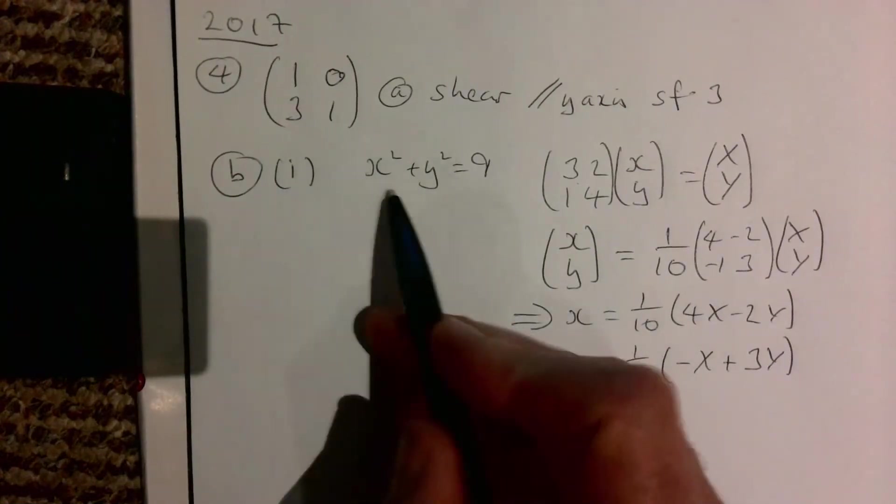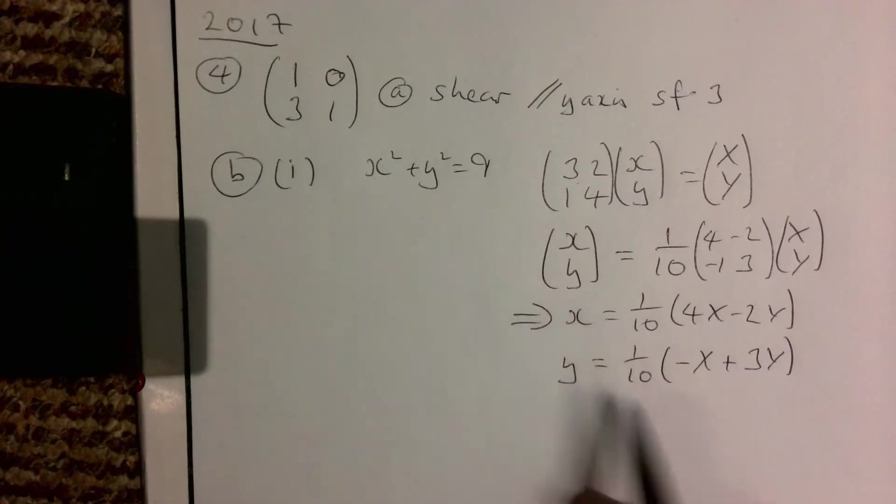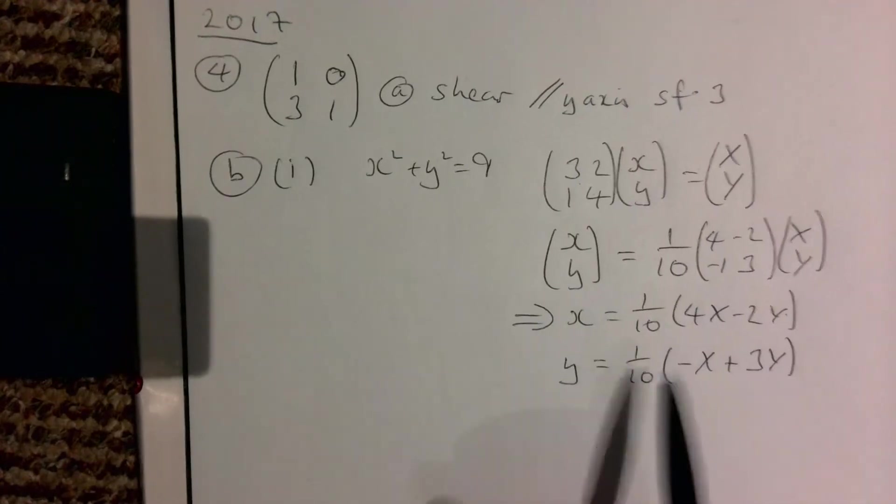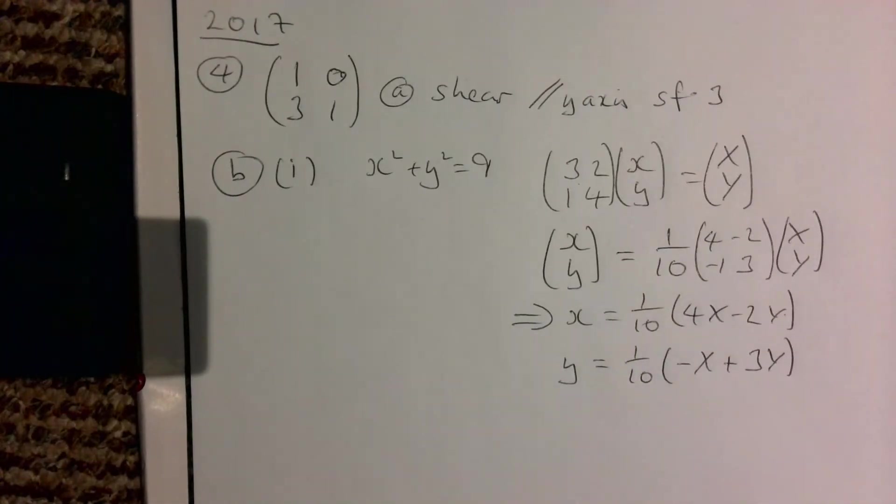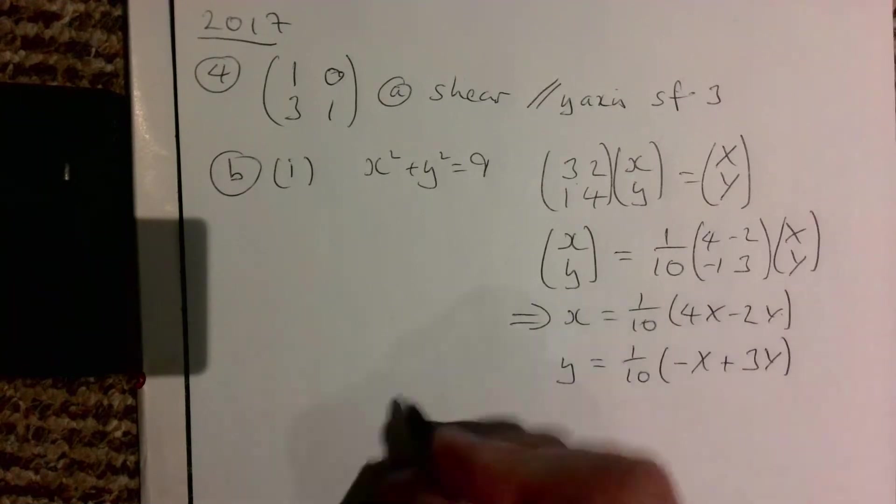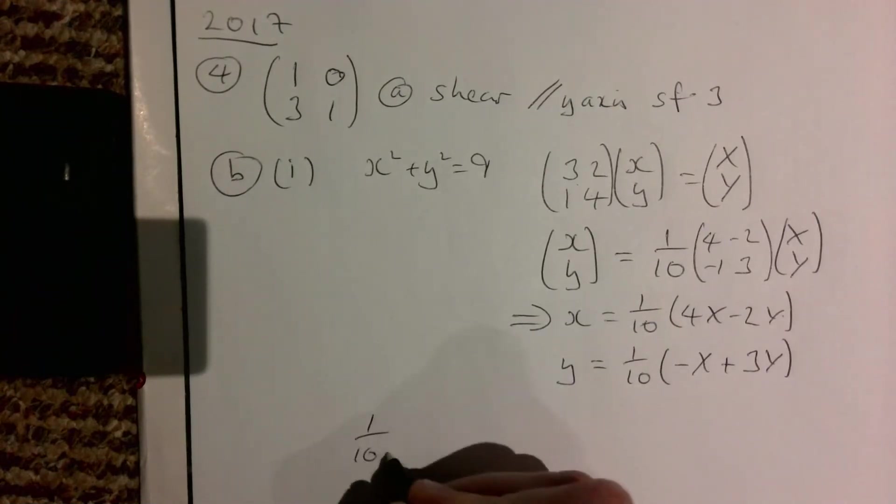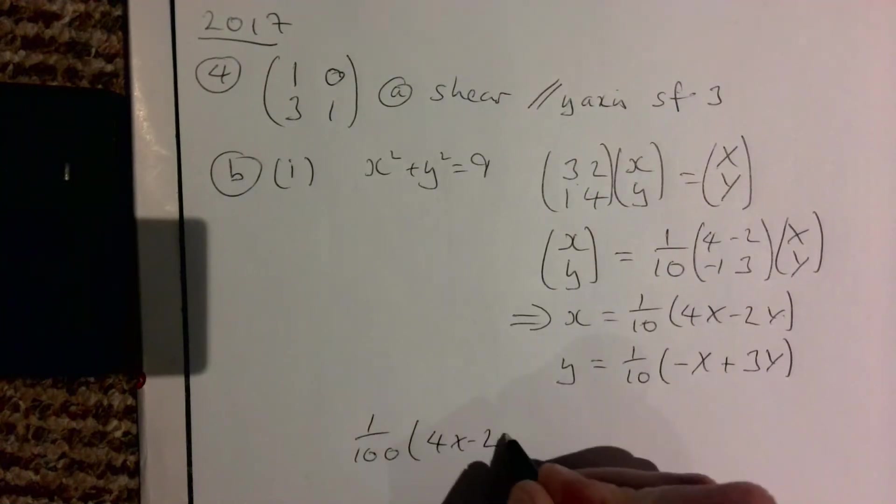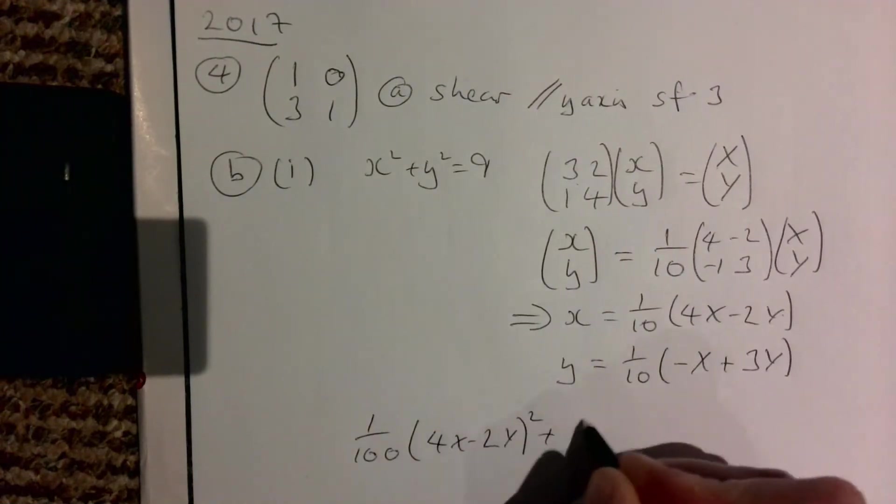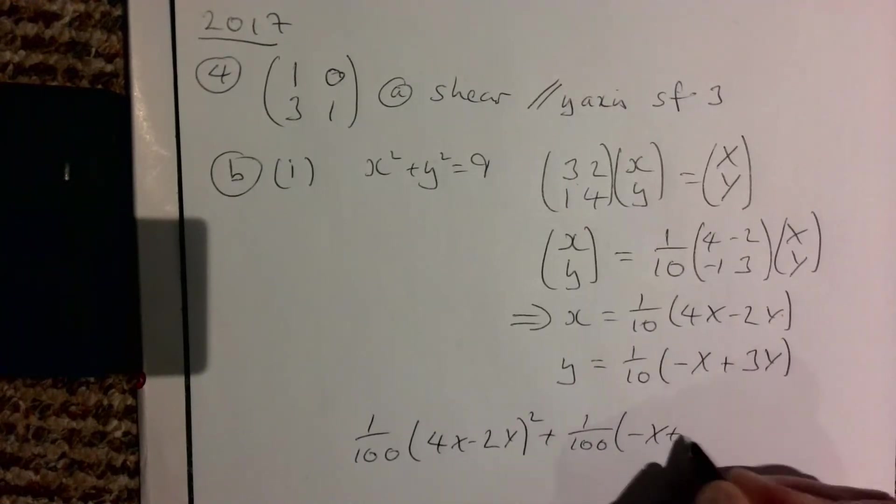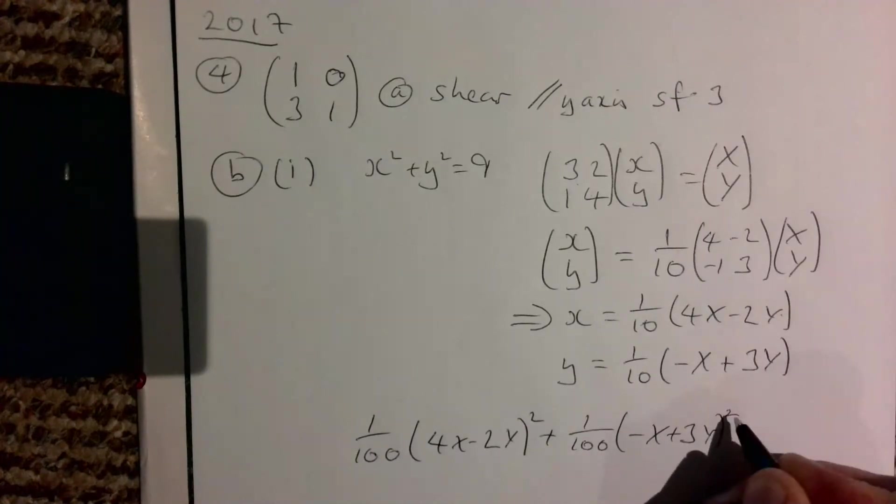So where do we go then from here? That means anytime I see an x here, I'm going to exchange it for this. Anytime I see a y here, I'm going to exchange it for this. Once we multiply it out and tidy it up, that'll give us what we need. That'll give us then our new shape. So let's sub this in and see what we end up with. We're going to square this, so it's going to be 1/100 (4x - 2y)² plus 1/100 (-x + 3y)² and that equals 9.